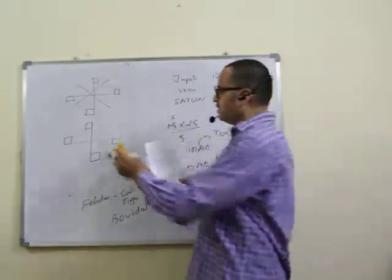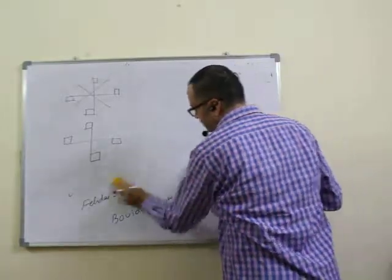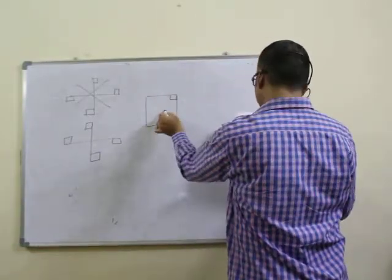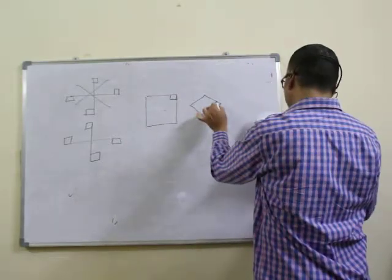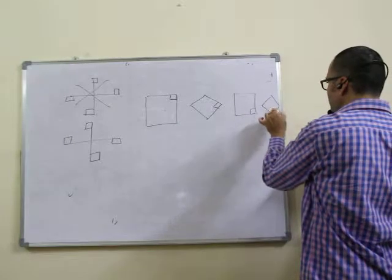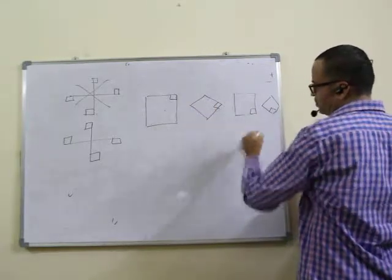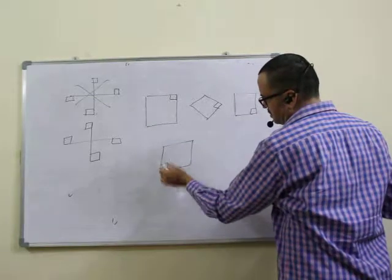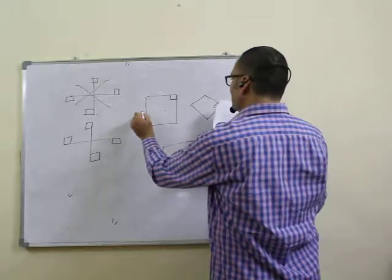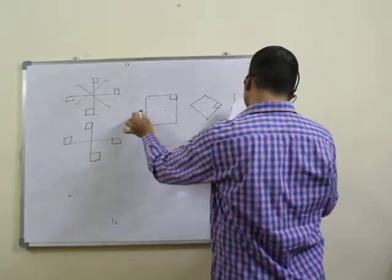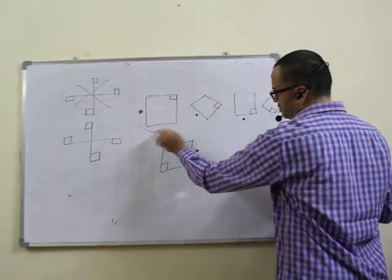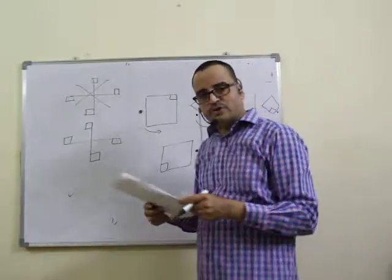Question twenty-two is a figure series. The structure rotates 45 degrees clockwise each step. Tracking the rotation: it goes 45 clockwise, then again 45 clockwise, so it continues the same. Second and fourth options are eliminated. The shaded dot moves anti-clockwise. Based on that, twenty-second question answer is third option.